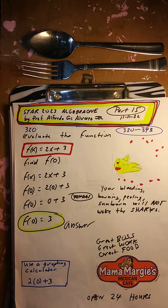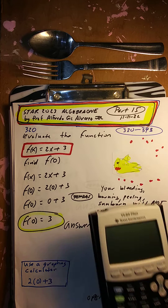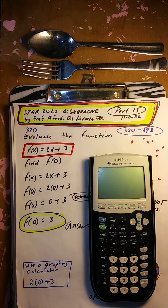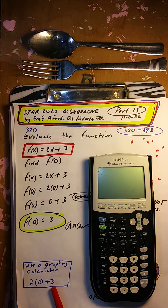You can use a graphing calculator. It looks like this — there's a key you use right here. Follow these instructions and you'll get the answer with the machine.